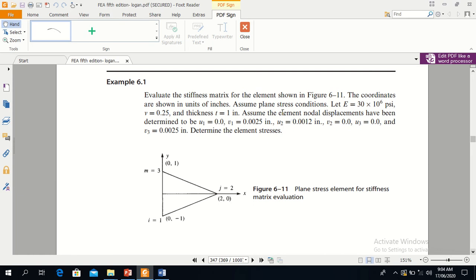Assume the element nodal displacements have been determined and are given as u1 equals 0, v1 is 0.0025, v2, u2 and v2 are also given, u3 is given and v3. So all the displacements of all the three nodes are given. Now determine the element stress.